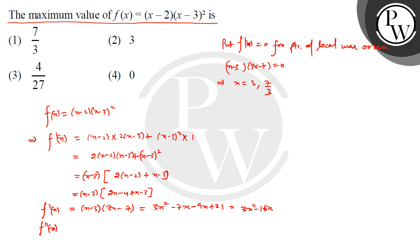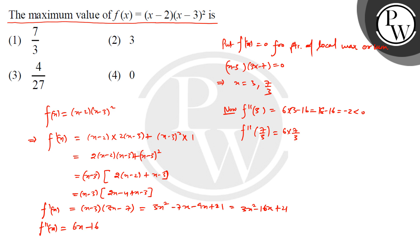Now computing f''(x): differentiating 3x² - 16x + 21 gives f''(x) = 6x - 16. Evaluating at x = 3: f''(3) = 18 - 16 = 2, which is positive. Evaluating at x = 7/3: f''(7/3) = 42/3 - 16 = (42 - 48)/3 = -6/3, which is negative.